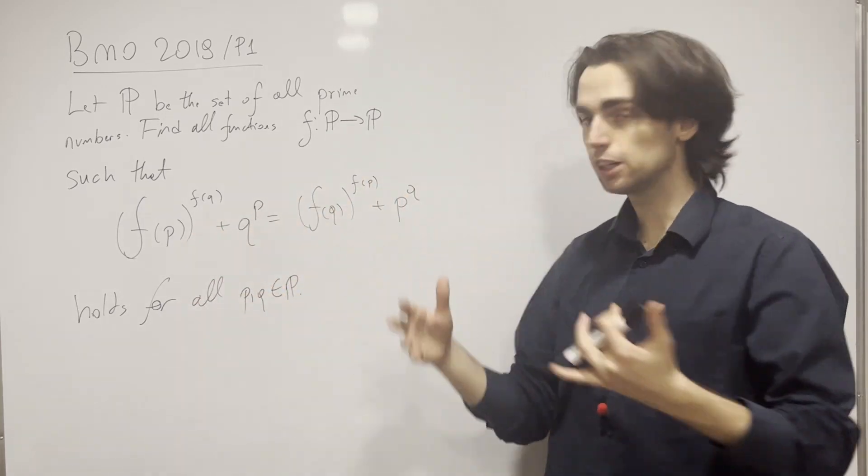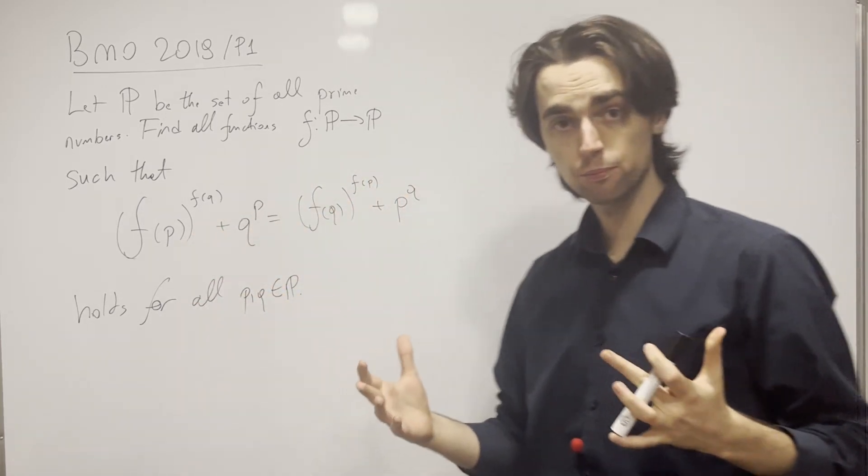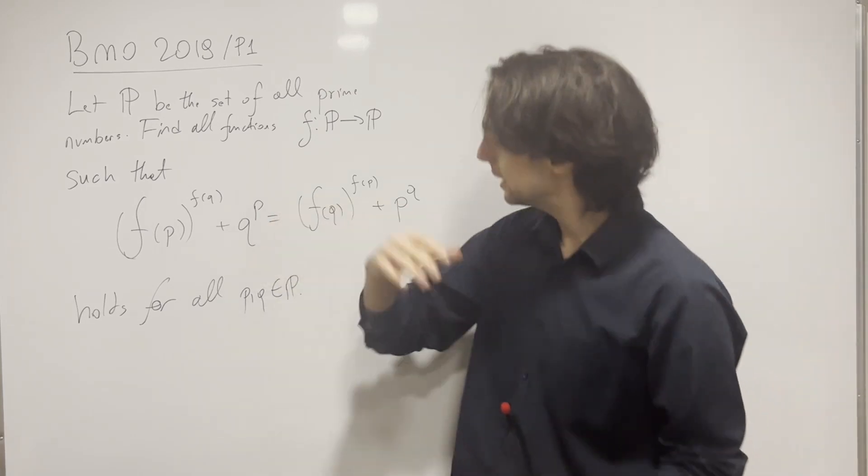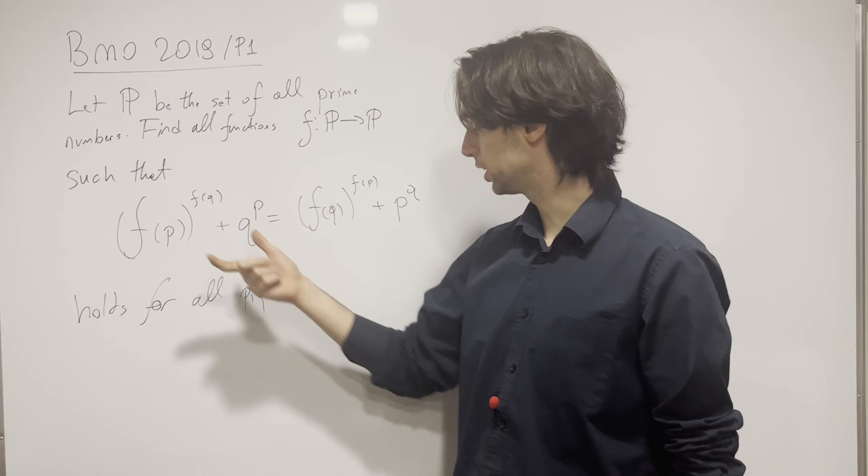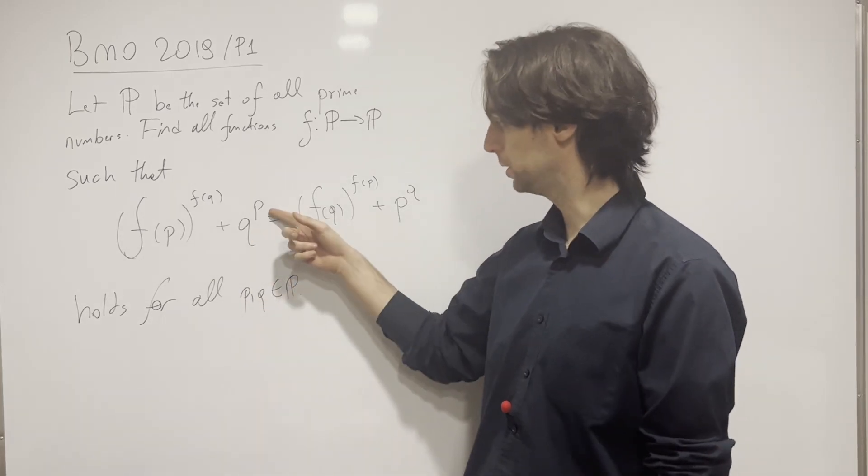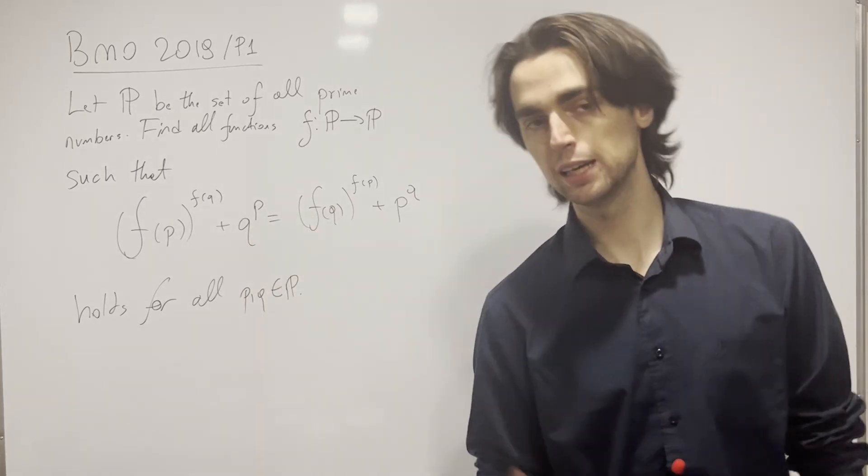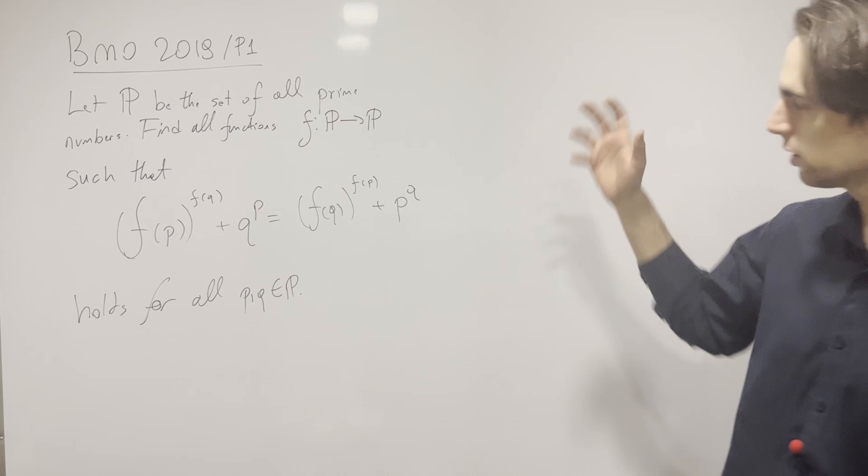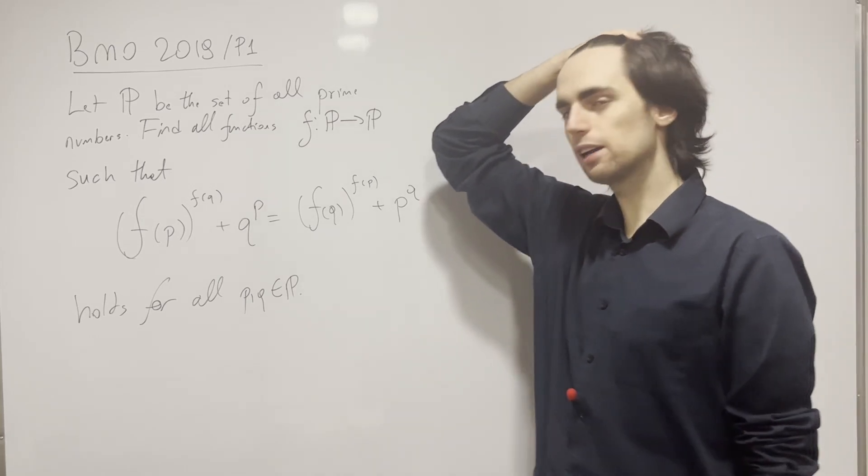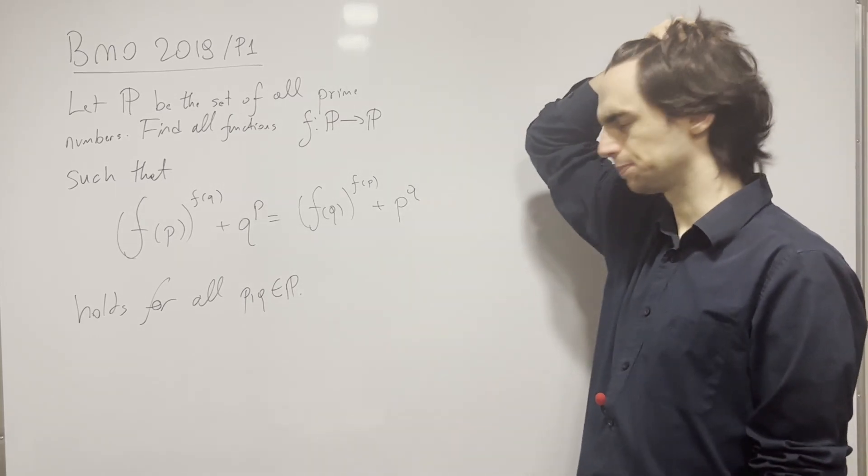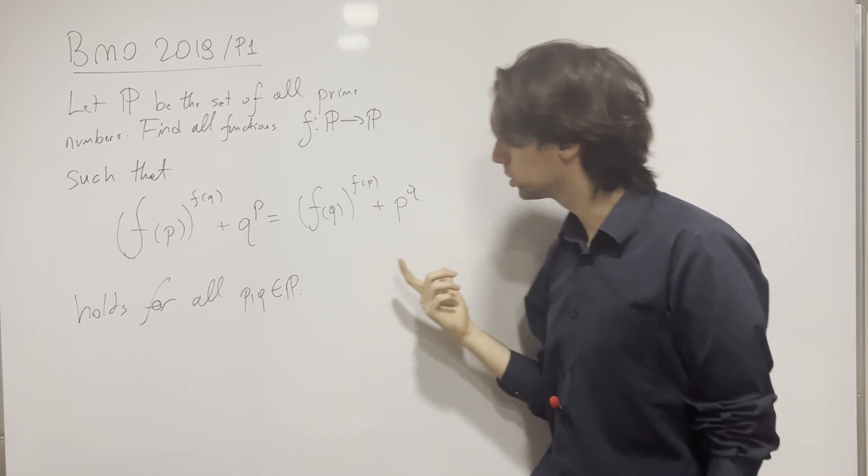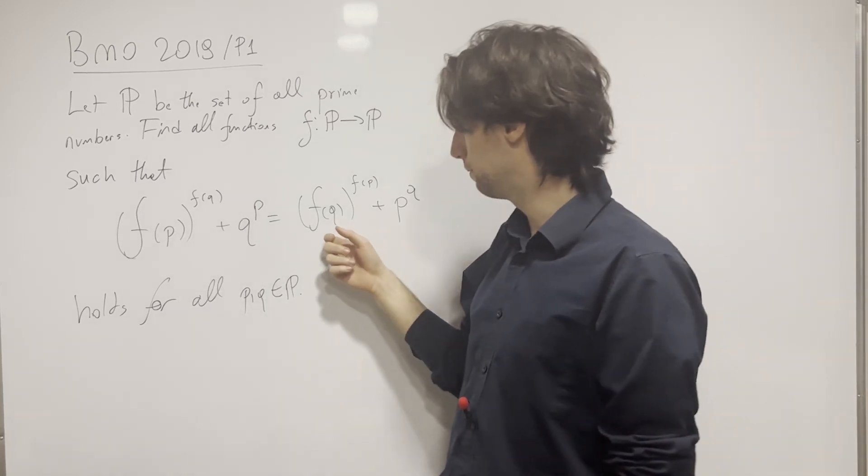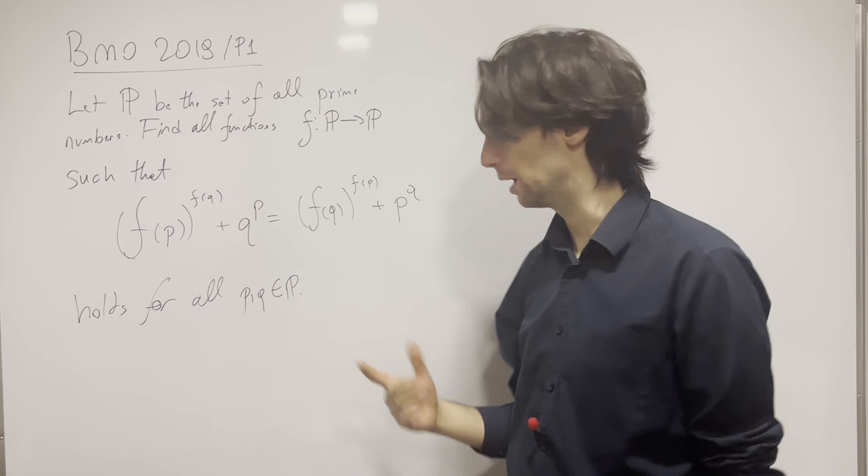What do you notice here? First thing that you notice that might not be useful for me is that this function is completely symmetric, which means if I swap p and q, like everywhere there's a p I put a q, everywhere there's a q I put a p, nothing happens. I can't look at that, but I'm in the set of primes.